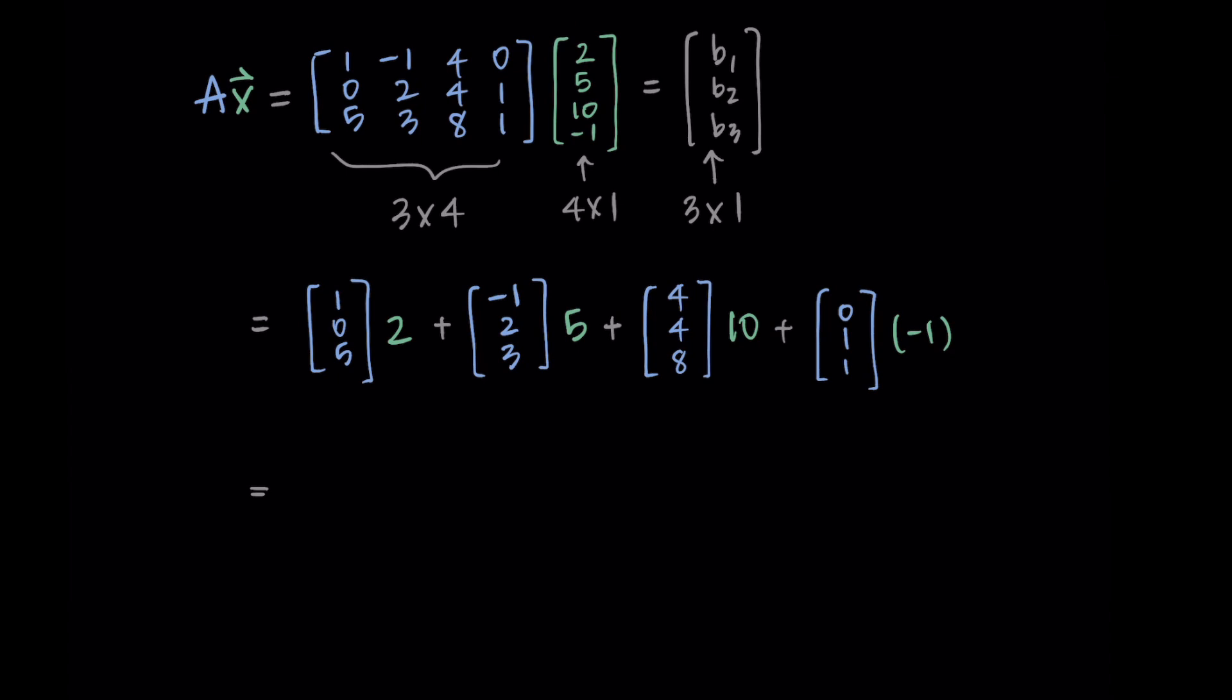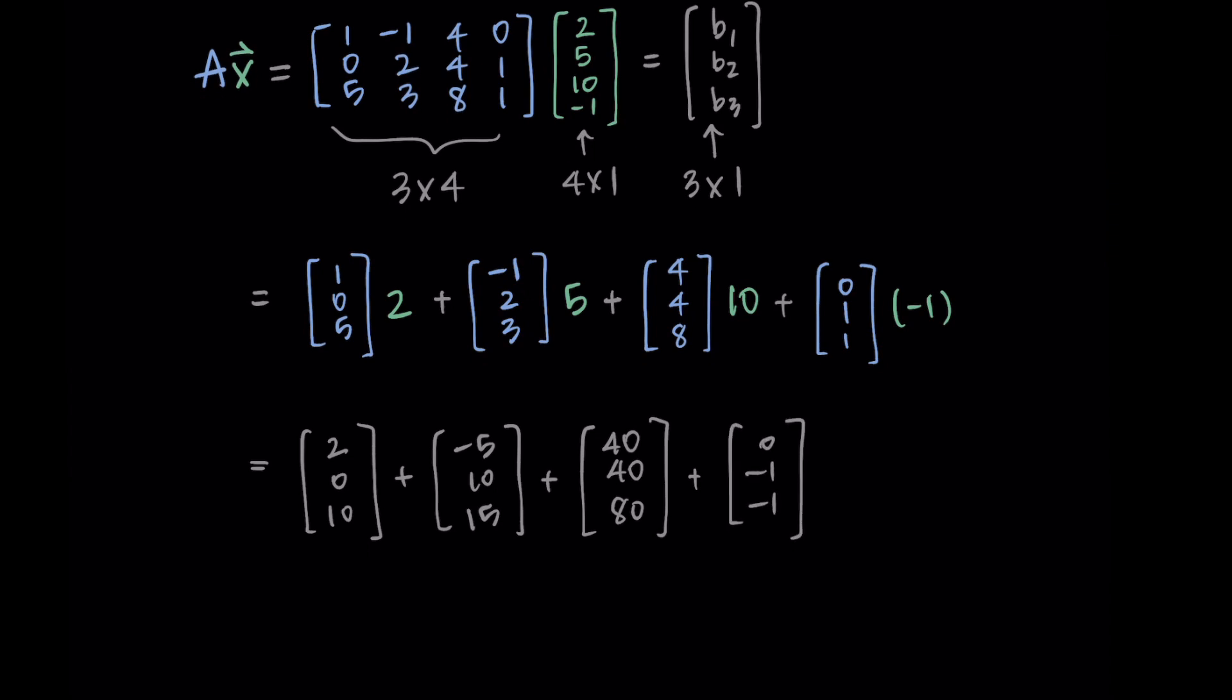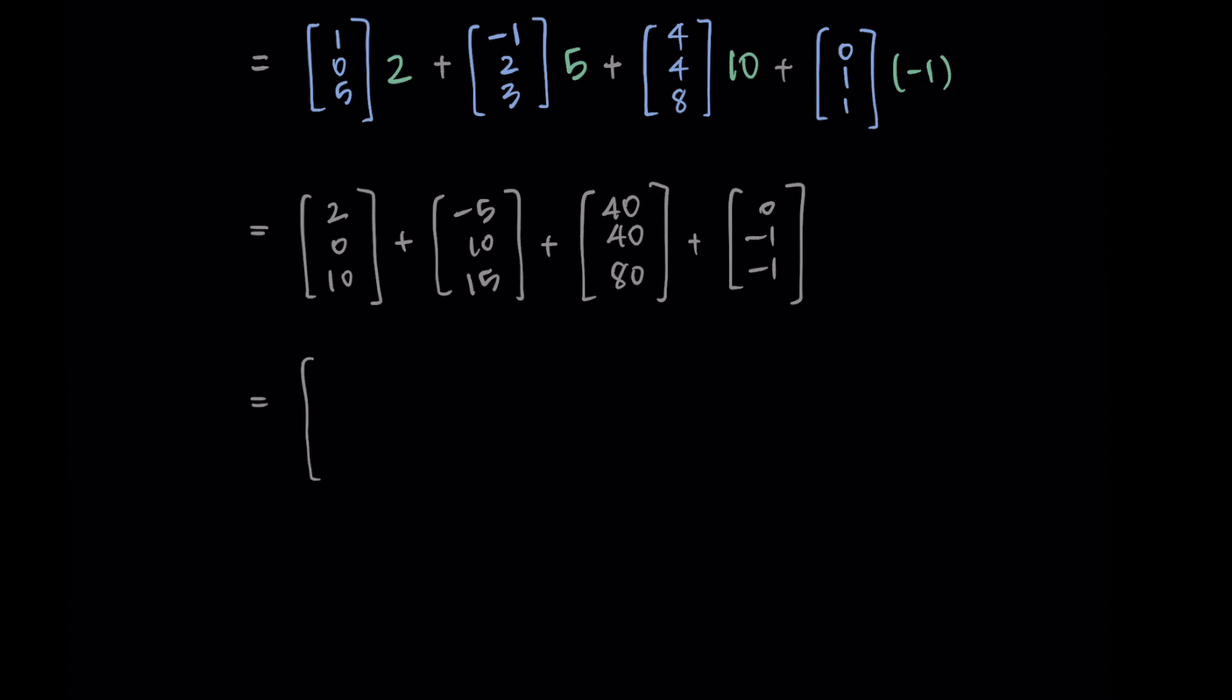Then we just distribute those scalars. So my first vector is 1, 0, 5 times 2 which gives me 2, 0, 10. My second vector is negative 1, 2, 3 times 5 which becomes negative 5, 10, 15. My third vector is 4, 4, 8 times 10 which becomes 40, 40, 80. And then my last vector is 0, 1, 1 times negative 1 which becomes 0, negative 1, negative 1.